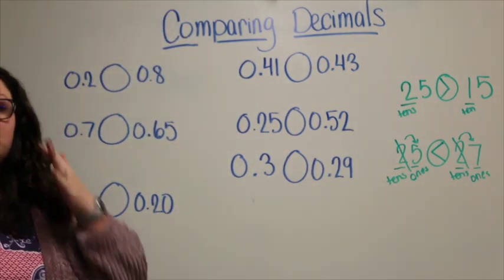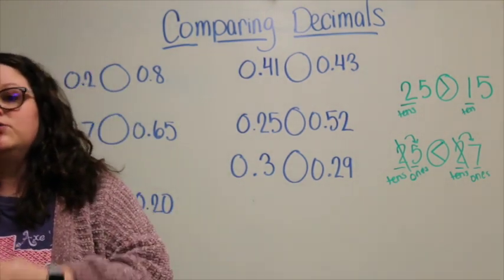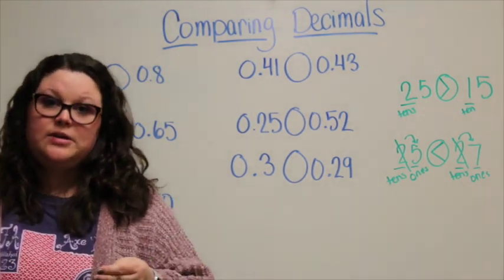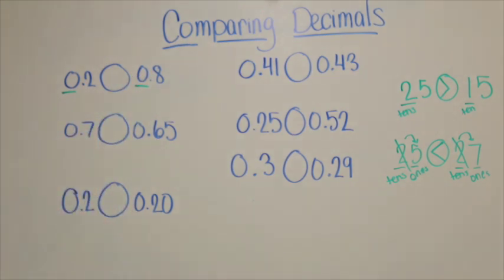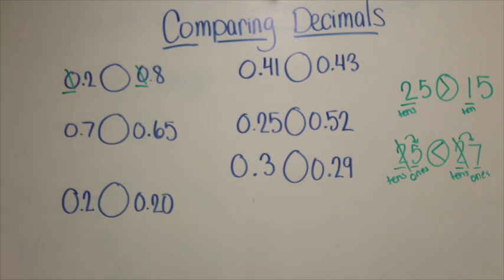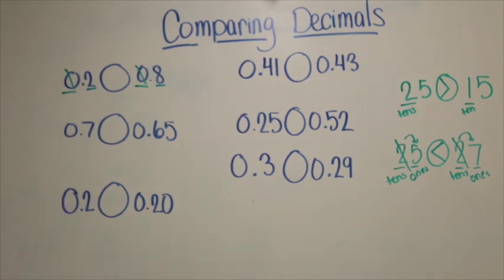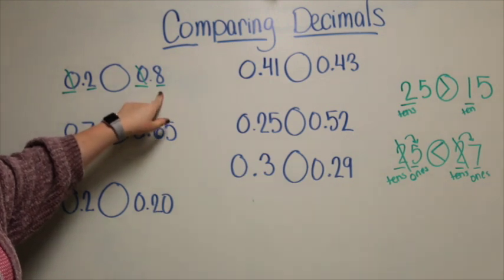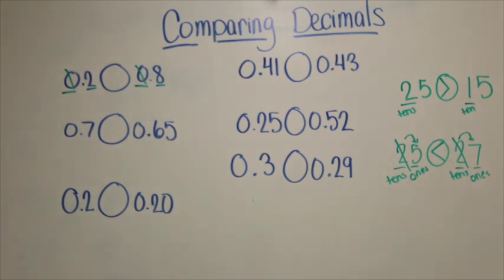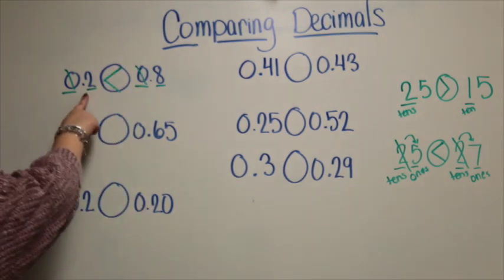We're going to use the same process and principles to compare decimals. We always start in our greatest place value and work our way down to our least place value. In our first example, the greatest place value is the ones place. Both numbers have a zero in the ones place, so I cross off that place value and go to my next one — the tenths place. In the number two tenths I have two tenths, and in the number eight tenths I have eight tenths. Eight tenths is greater than two tenths, so two tenths is less than eight tenths.